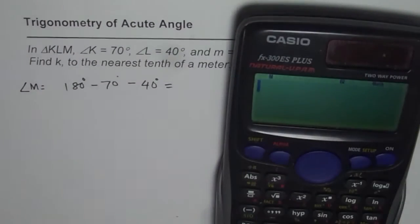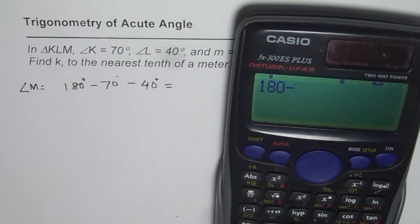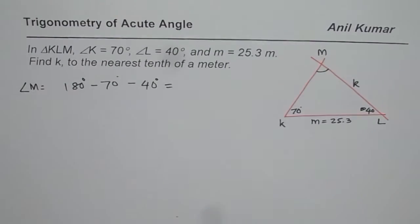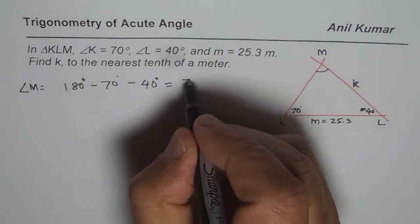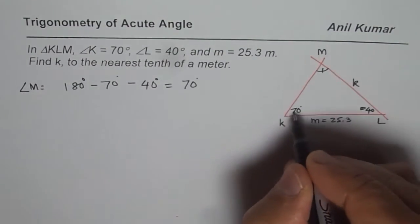Let's use the calculator. So 180 minus 70 minus 40 equals 70. So it's an isosceles triangle. So we found this equals to this.